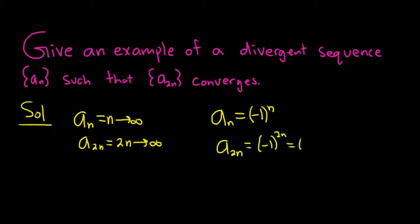And you can write this as negative 1 squared to the n. And then negative 1 squared is 1. So we get 1 to the n, so we get 1. So this, in fact, does converge to 1.